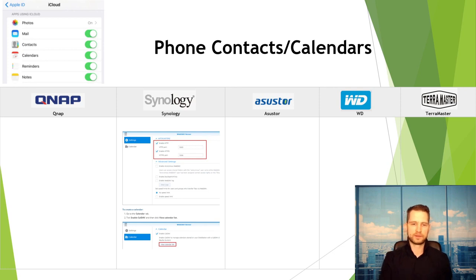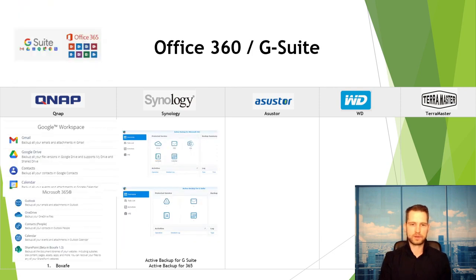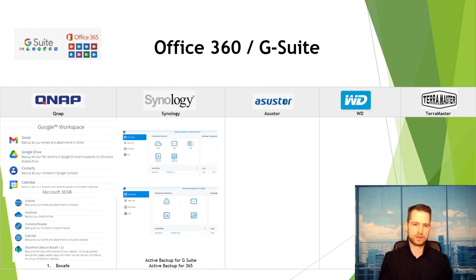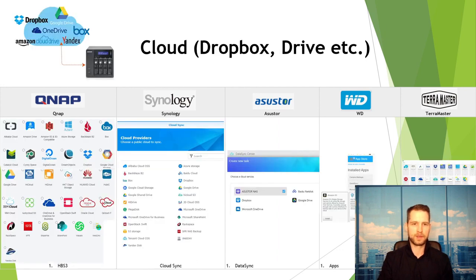Same with calendars — any new event added is automatically pushed to all connected team members' calendars. For backing up Office 365 or G Suite, only QNAP and Synology offer this. QNAP uses BoxSafe and Synology uses Active Backup for G Suite and 365. Other brands do not support this, so if you need to back up Office 365, QNAP or Synology are your only options.